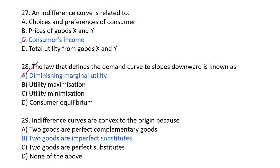29th question: indifference curves are convex to their origin because the two goods are imperfect substitutes. If they were perfect substitutes, the indifference curve would be a straight line. Because goods are imperfect substitutes, the indifference curve is convex to its origin. So the answer will be B.